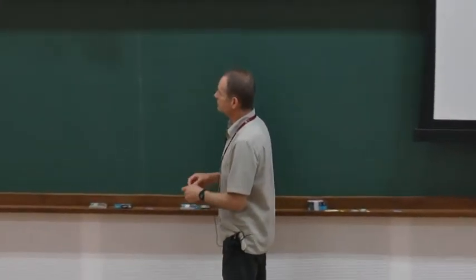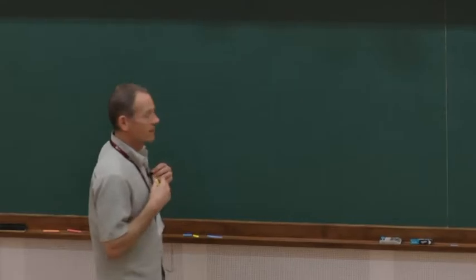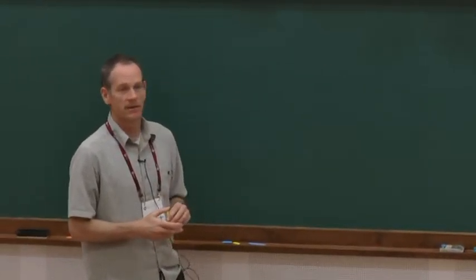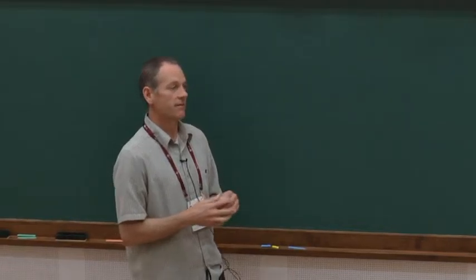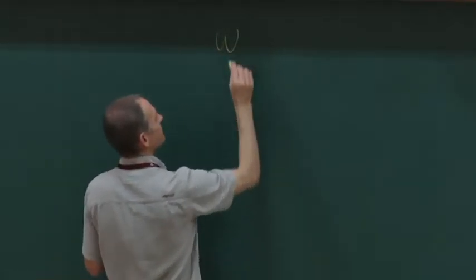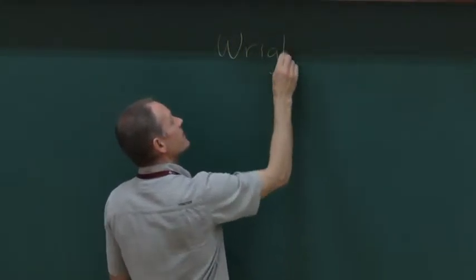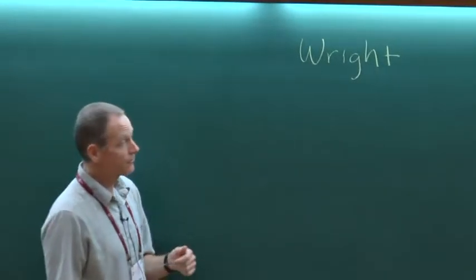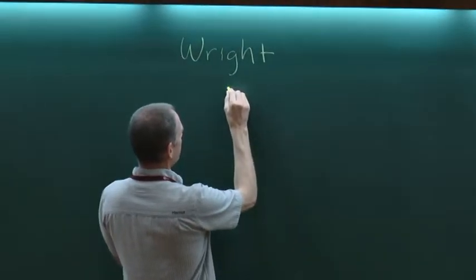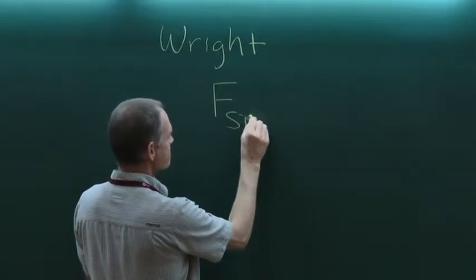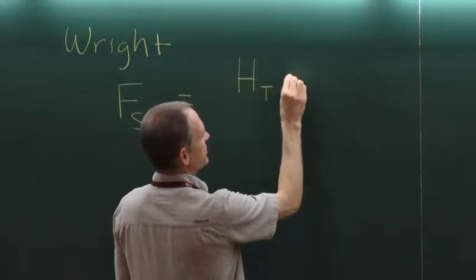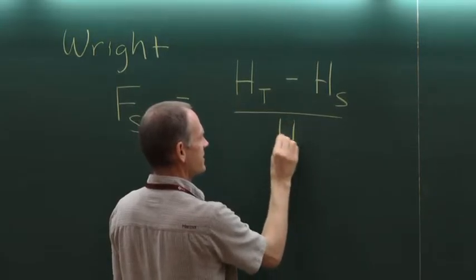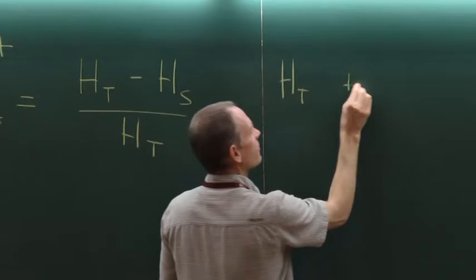Before I get going, I wanted to follow up on the end of the last lecture. I wanted to make a connection to something people do all the time in population genetics, which is to use FST to estimate migration rates. This goes back to Sewell Wright. Bruce, you mentioned FST briefly. So FST can be written as HT minus HS over HT, where HT is the total population heterozygosity.